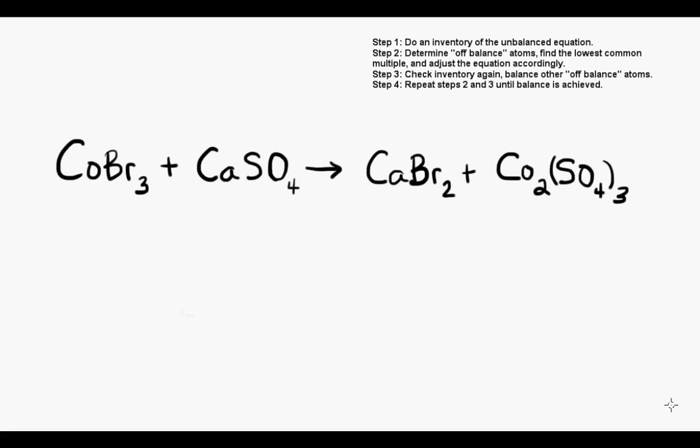So we'll start out by taking our inventory below the equation. We have cobalt, bromide, calcium, and, oh, look at that, we have a polyatomic ion, sulfate.